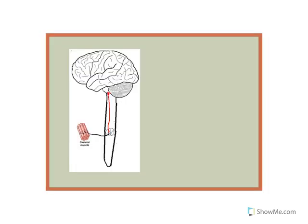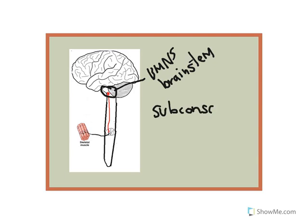The upper motor neuron of all of these pathways will be located somewhere within the brainstem. We'll specifically tell you for each one where they originate. They will synapse with lower motor neurons in either the anterior grey horn of the spinal cord or within motor nuclei of cranial nerves. One key distinction from the pathways in part one is that these are all involved in the subconscious control of skeletal muscle, because the upper motor neurons do not originate within the cerebral cortex.